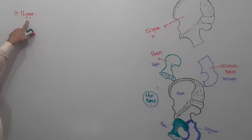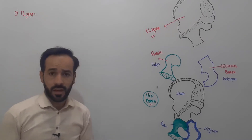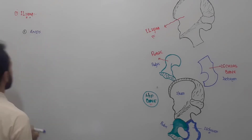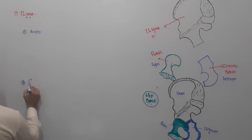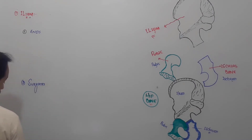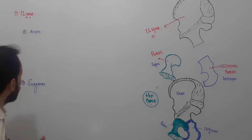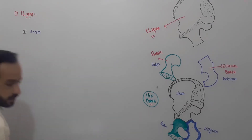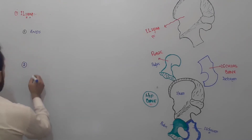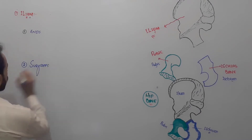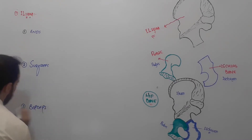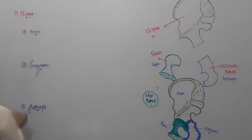The ilium has three important parts. First, I will discuss the ends, then the surfaces, and then the borders. So the ilium will be discussed under three topics: its ends, its surfaces, and its borders. It will be a very easy lecture — look carefully.